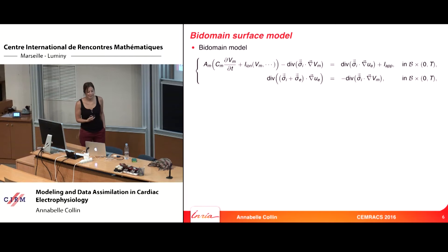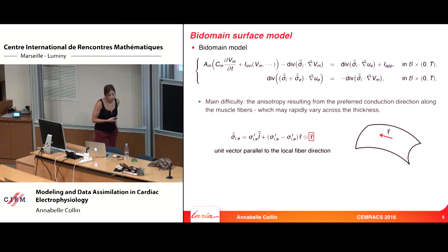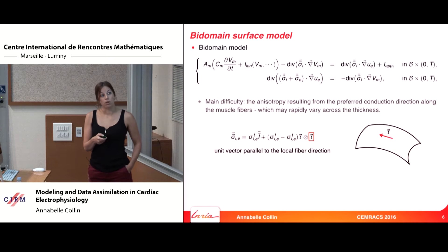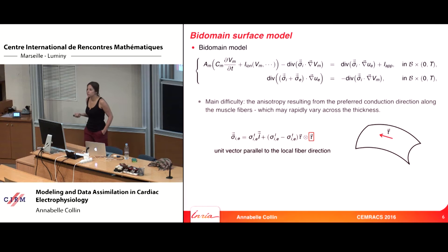I recall the bidomain model. The main difficulty comes from the fact that the heart has a fiber architecture, and this fiber provides a preferred direction for the diffusion of the signal. The intracellular and extracellular tensors are each decomposed into two parts: a homogeneous part with propagation in all directions, and a part along the fiber, where tau is the unit vector parallel to the local fiber direction.